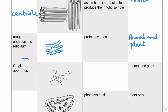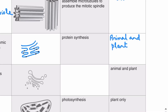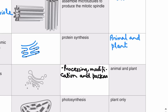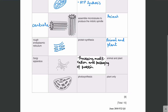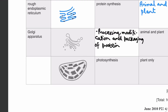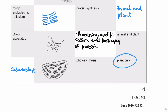The next organelle is the Golgi apparatus. Its functions are processing, modification, and packaging of proteins. The Golgi apparatus is also involved in the formation of secretory vesicles and lysosomes. The Golgi apparatus is found in both animal and plant cells. The final organelle shown is a chloroplast — its function is photosynthesis, and chloroplasts are found in plant cells only.